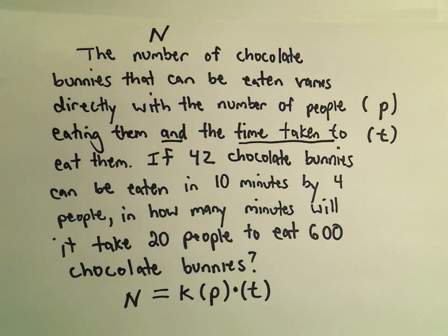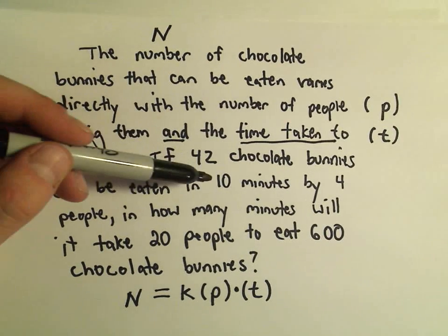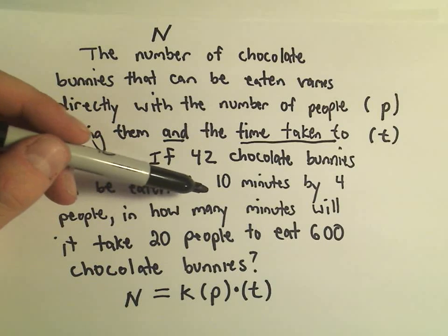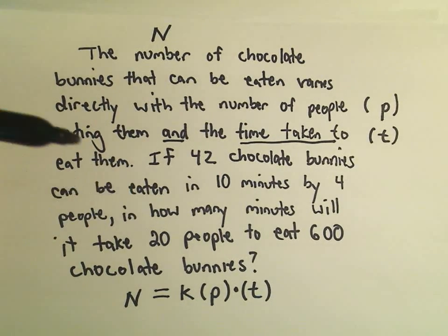So they tell us that this group of people can eat 42 chocolate bunnies in 10 minutes if four people are doing it. And we want to know how long it would take 20 people to eat a total of 600.